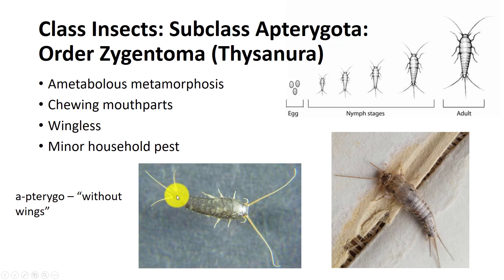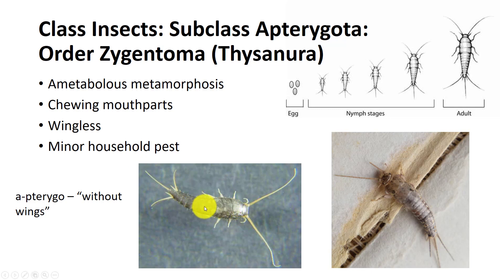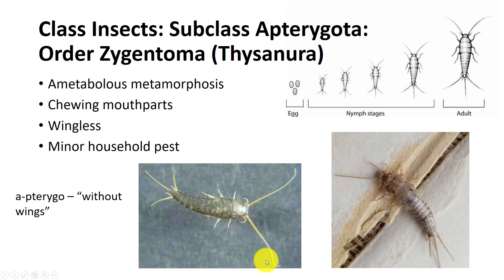They have two long cerci and one caudal filament at their posterior end. They have small compound eyes and scales that may be present. The body is dorso-ventrally flattened with a teardrop shaped body. It has long, thin, multi-segmented antennae. There are 370 species worldwide.